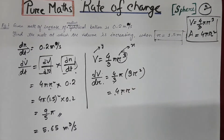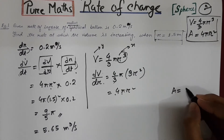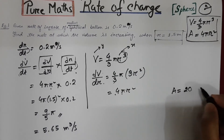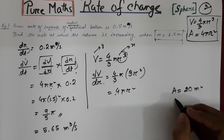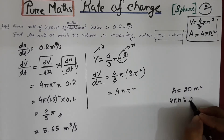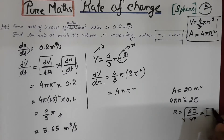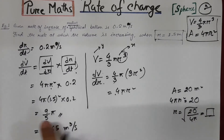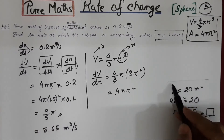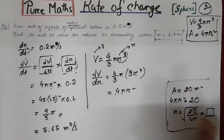Sometimes the value of r is not given directly — they can give you the value of the surface area, for example 20 meters squared. In that case you need to use the formula 4π r² = 20, then make r the subject. That is how you will get the value of r, and then you can use that value of r in the main calculation.